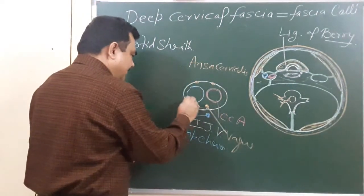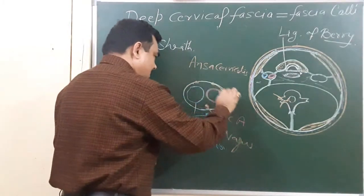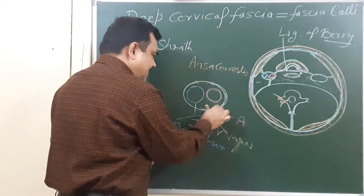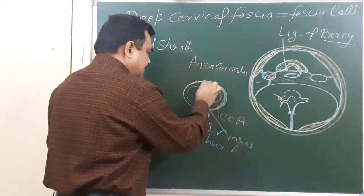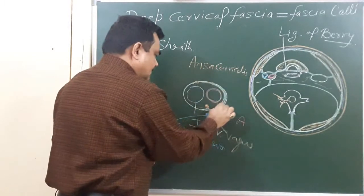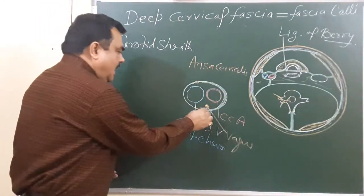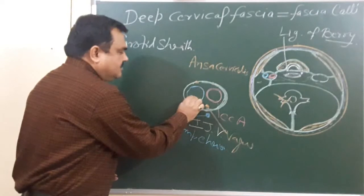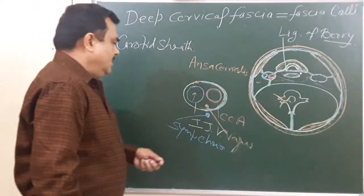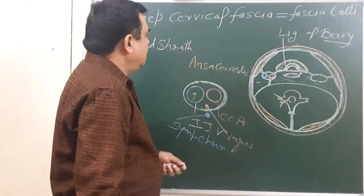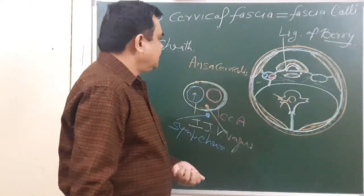The lateral part of this fascia is thin and the medial part is thick. This lateral thin part allows more blood to pass through the internal jugular vein. So this is all about the carotid sheath.